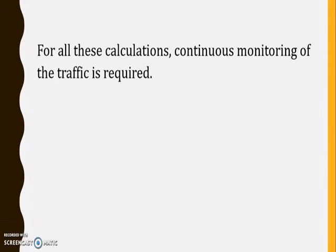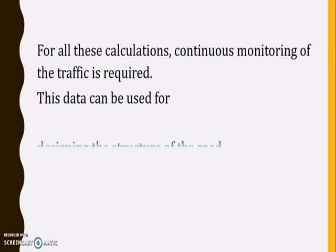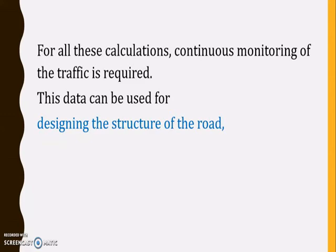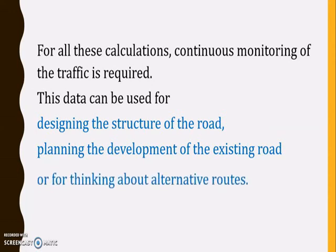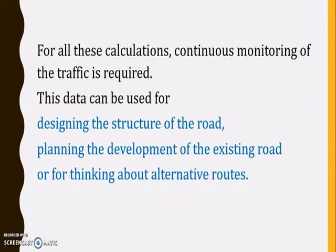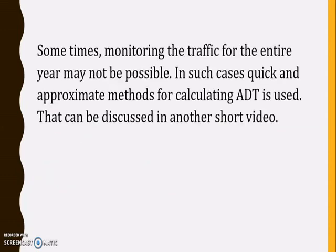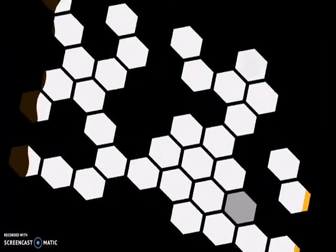For all these calculations, continuous monitoring of the traffic is required. This data — ADT, AWT, AADT, or AAWT — can be used for various purposes: designing the structure of the road, finding planning aspects for the development of existing roads, or thinking about alternative roads required if there is a traffic jam. Sometimes monitoring the traffic for the entire year may not be possible. In such cases, quick and approximate methods for calculating ADT and AADT can be discussed in another short video. Thank you for the time you have spent watching this video.